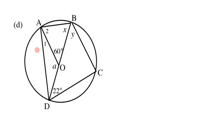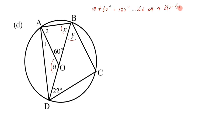For exercise D, we need to calculate three missing angles: a, x, and y. To find angle a, we use the fact that DOB is a straight line, so angles on a straight line add up to 180 degrees. Therefore a plus 60 degrees equals 180 degrees, reason: 'angles on a straight line'. So a equals 180 minus 60, giving a equals 120 degrees.